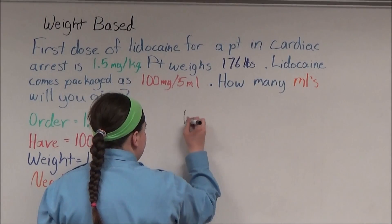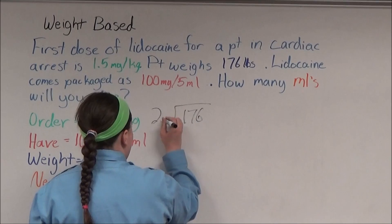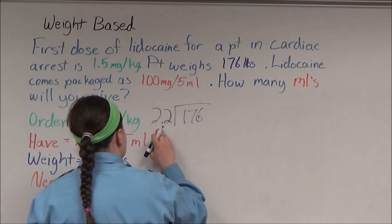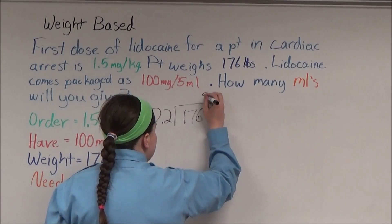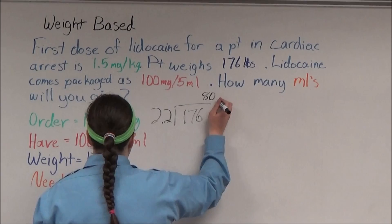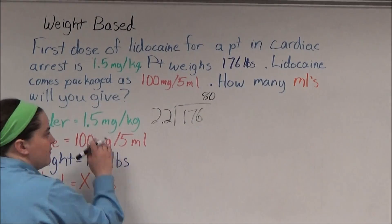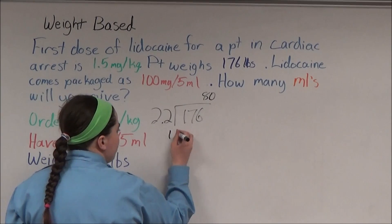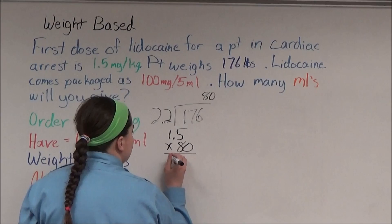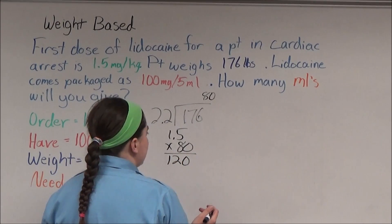So 176 divided by 2.2 to convert it — 176 divided by 2.2 is 80. Then I take 80 kilograms and multiply that by 1.5. 1.5 times 80 is 120. Now I have to solve for x.